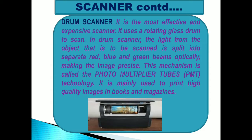The drum scanner is the most effective and expensive scanner. It uses a rotating glass drum to scan. The light from the object to be scanned is split into separate red, blue and green beams optically, making the image precise. This mechanism is called Photo Multiplier Tubes (PMT) technology. It is mainly used to print high quality images in books and magazines.